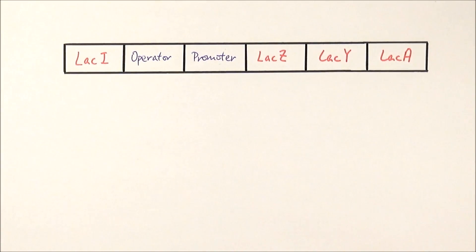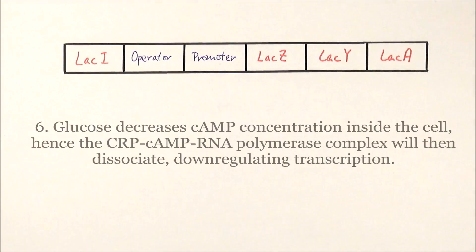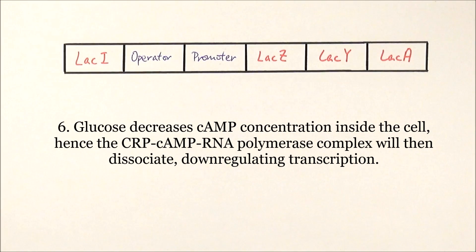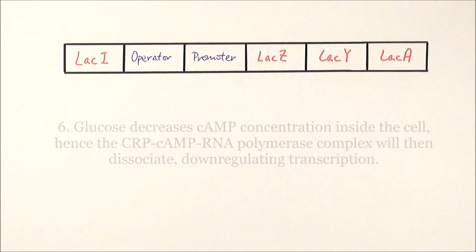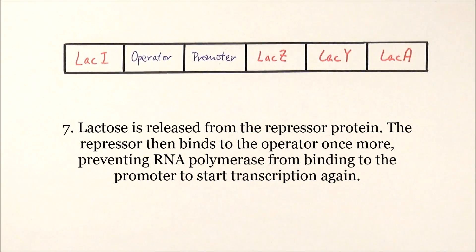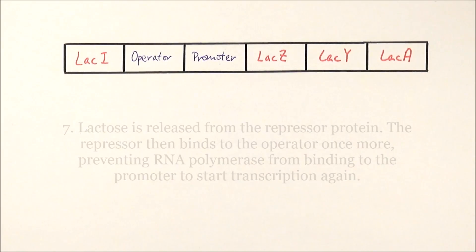However, if glucose is present again, the cell prefers glucose over lactose. Glucose downregulates the concentration of cAMP within the cell, which removes the upregulation of RNA polymerase and stops the LAC operon structural genes from being expressed. At the same time, lactose is released from the repressor protein, and the repressor protein can once more bind to the operator, preventing RNA polymerase from binding to the promoter to start transcription.